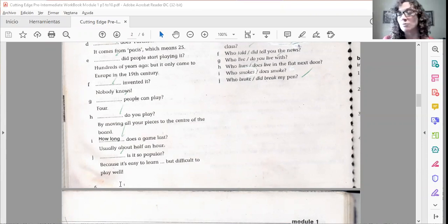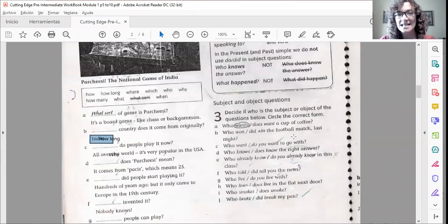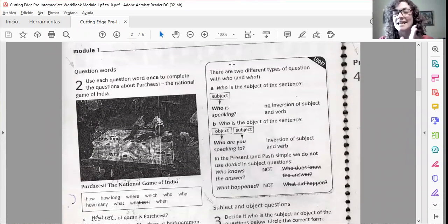And the last one, because we have no other, it's why. But does it have sense? Let's check. Why is it so popular? Yeah, it grammatically is correct. Let's look at the answer. Because it's easy to learn, but difficult to play well. So yes, this is the explanation. Por qué es tan popular el juego? So in this case, this is okay. Very good. Excellent. Then, up to here. Let's move on and let's take a look at this explanation.